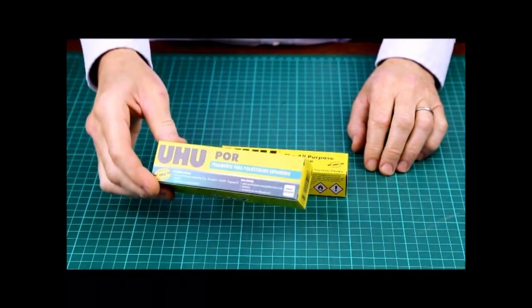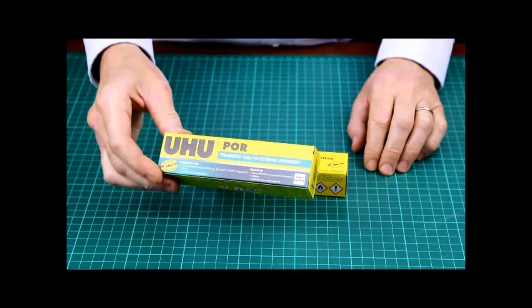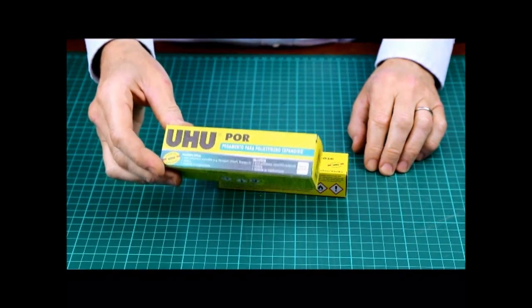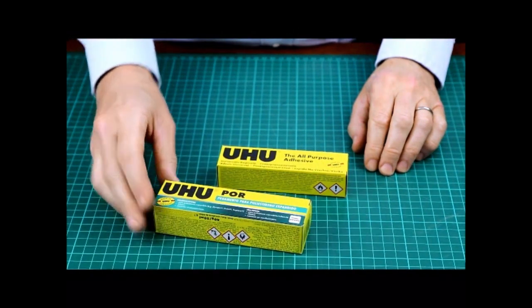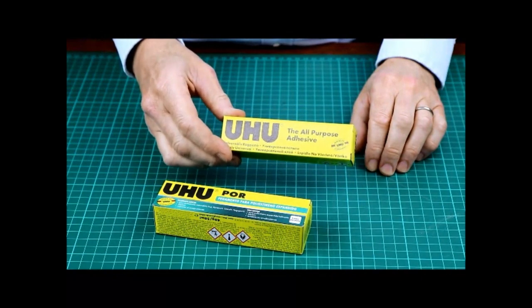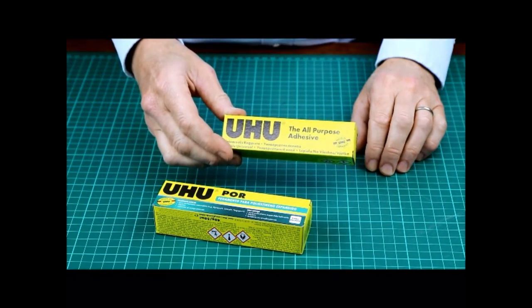The best glue for gluing foam board is UHU Por. It is especially designed to be safe on foam which means it won't melt the foam. You can use normal UHU but it will melt the styrofoam core so you have to use it sparingly.